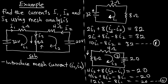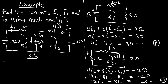With the mesh analysis we obtained two equations — Equation 1 and Equation 2 — both in terms of small letter i1 and i2. Solving them simultaneously gives small letter i1 = 4 amperes and small letter i2 = 1 ampere. These are the mesh currents, not the original branch currents.